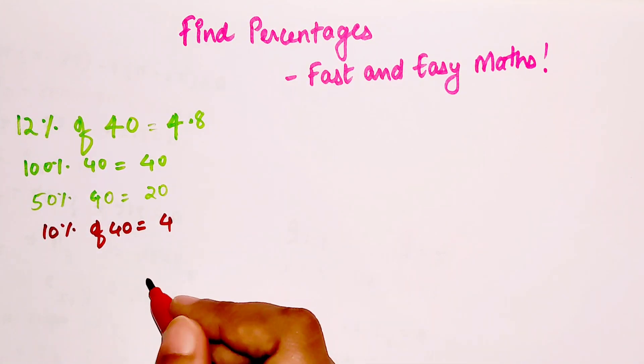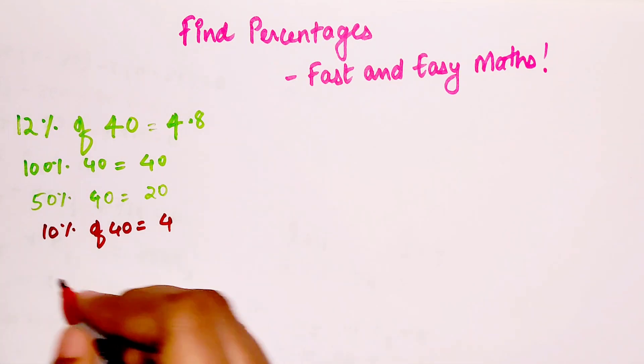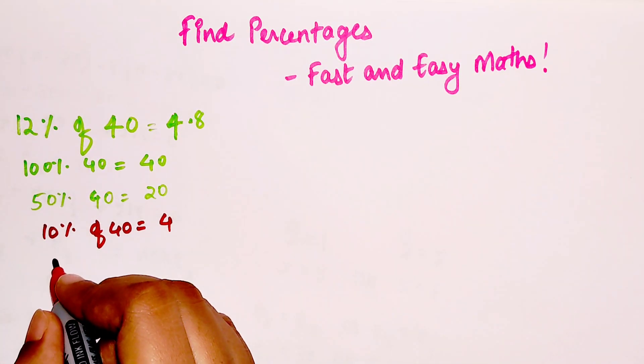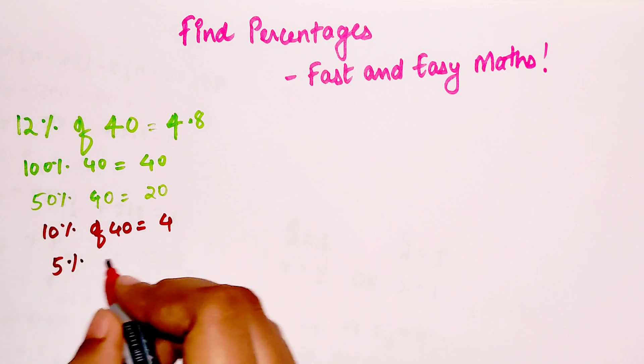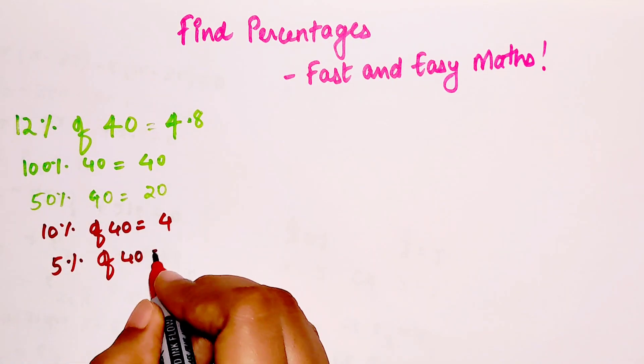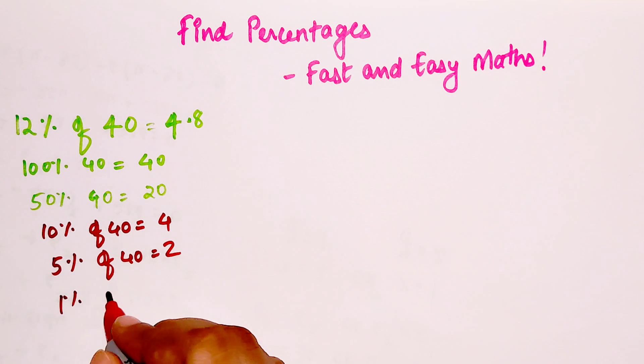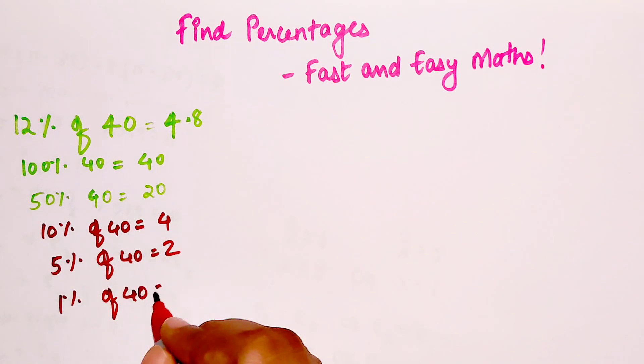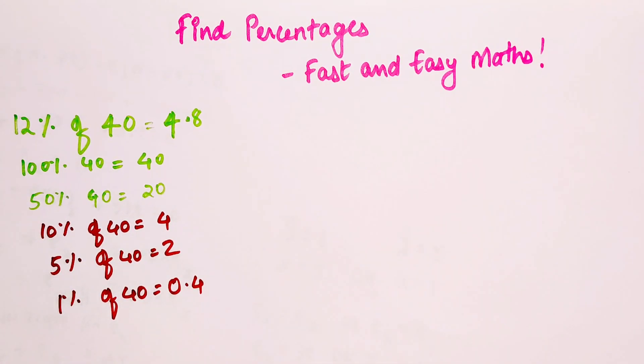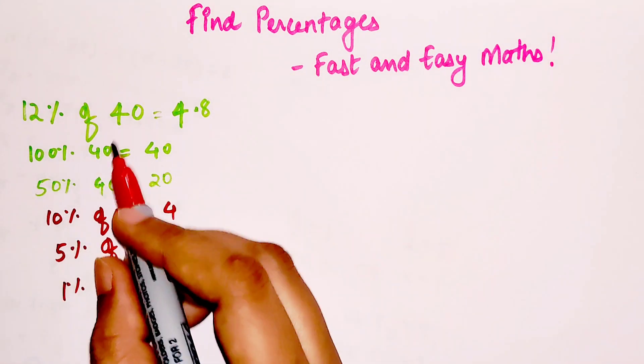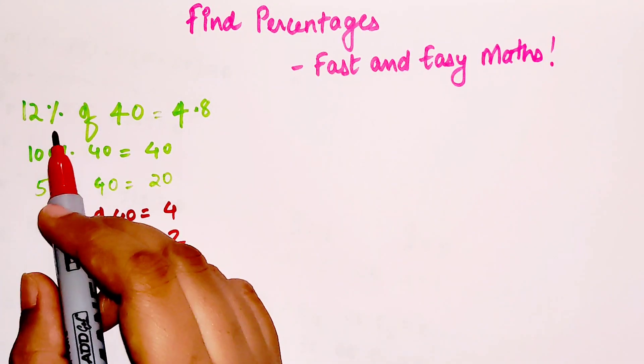So now, if I wanted 10% of 40, it would be 4, correct. And 5% of 40 would be 2, correct.